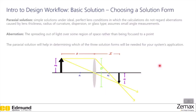Having those application examples alone may not help you in identifying which solution type you need if your application is different. So to help with that, we will discuss the paraxial solution. The paraxial solution consists of simple solutions under ideal, perfect lens conditions, in which the calculations do not account for aberrations caused by lens thickness, radius of curvature, dispersion, or glass type, and it assumes small angle measurements.